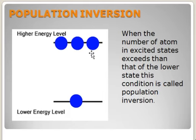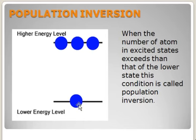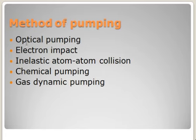Population inversion is the condition when the number of atoms in the excited state exceeds the number of electrons in the lower states. To achieve this condition, we must reverse the normal equilibrium condition. Normally, there are more electrons in the ground state and fewer in the excited state. To invert this, we pump some ground state electrons to the excited state using pumping methods. These include optical pumping, electron impact pumping, inelastic atom-atom collision, chemical pumping, and gas dynamic pumping.